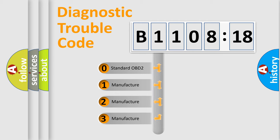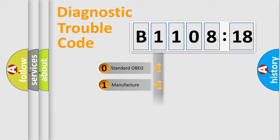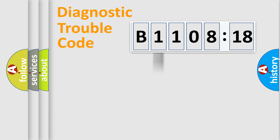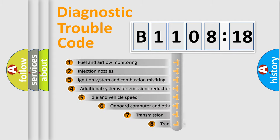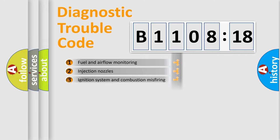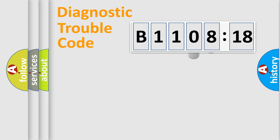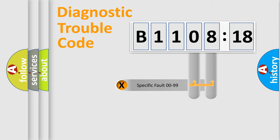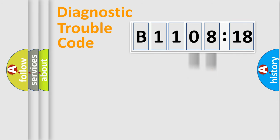If the second character is expressed as zero, it is a standardized error. In the case of numbers 1, 2, or 3, it is a manufacturer-specific expression of a car-specific error. The third character specifies a subset of errors. This distribution is valid only for the standardized DTC code, and only the last two characters define the specific fault of the group.